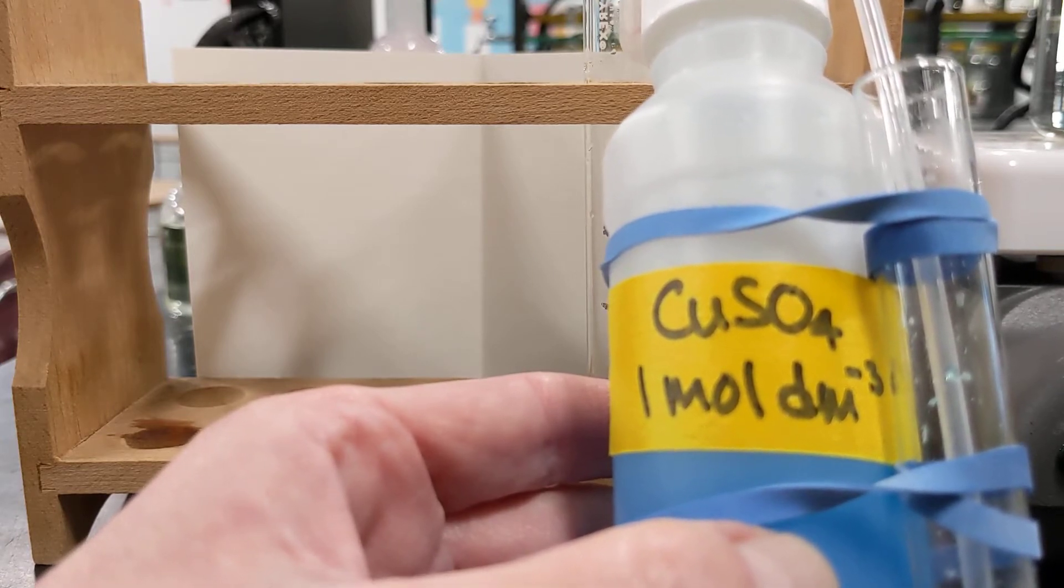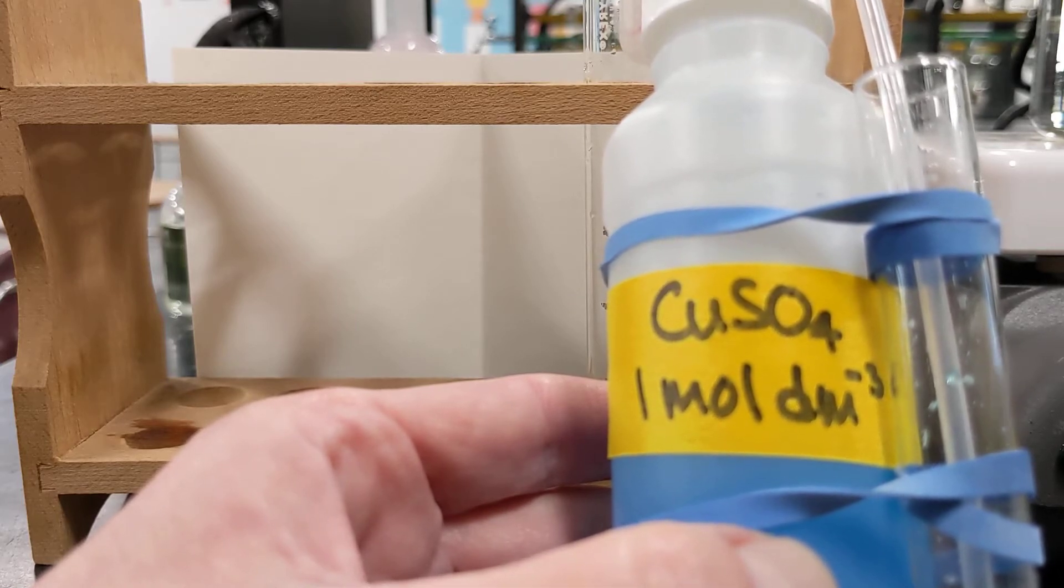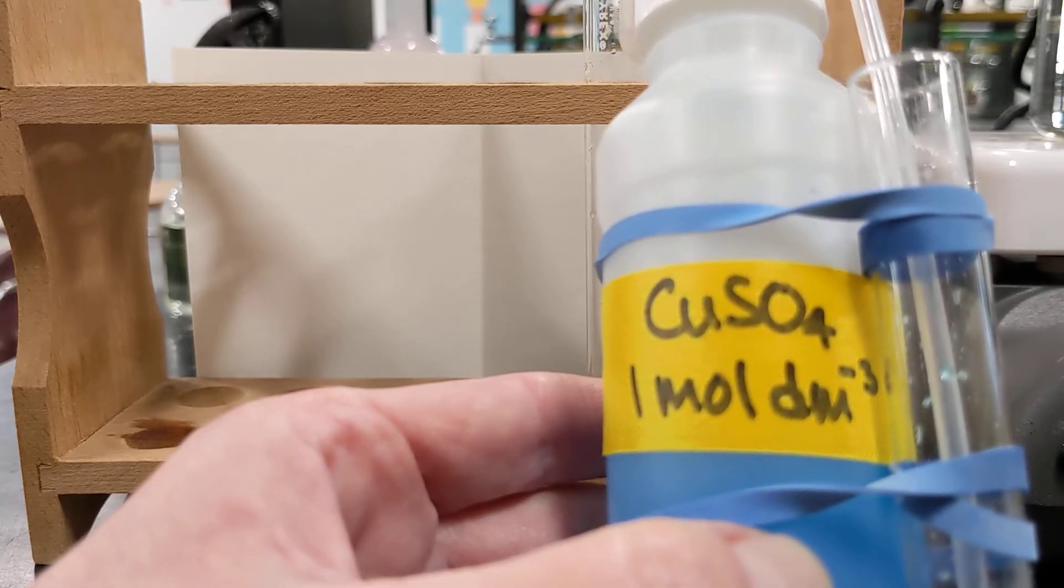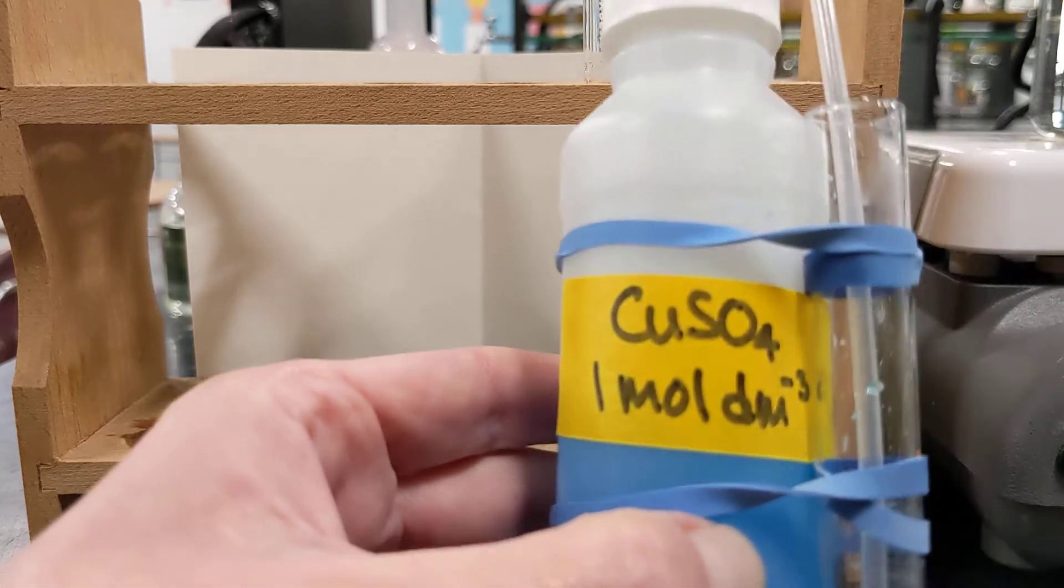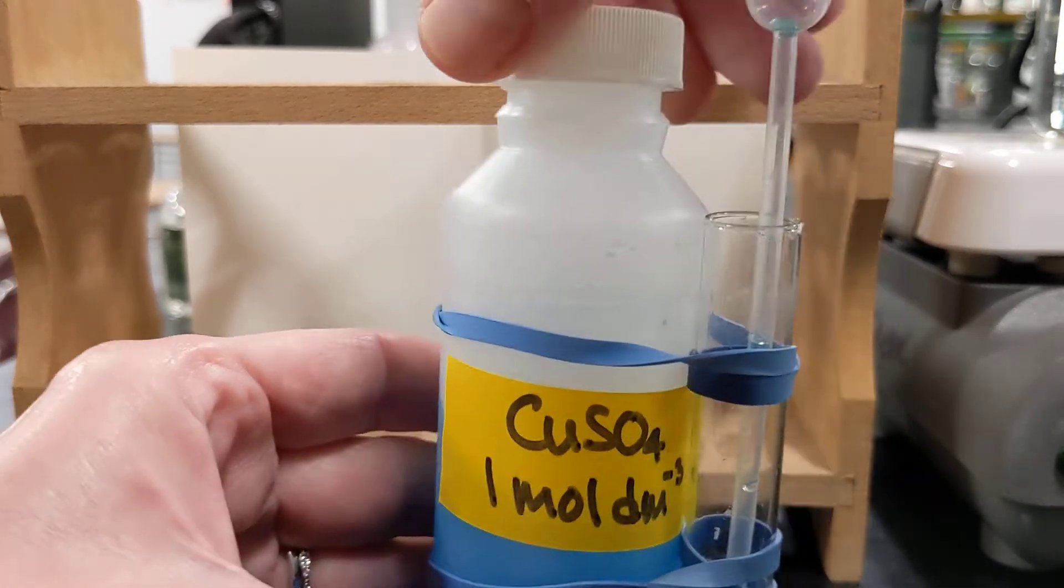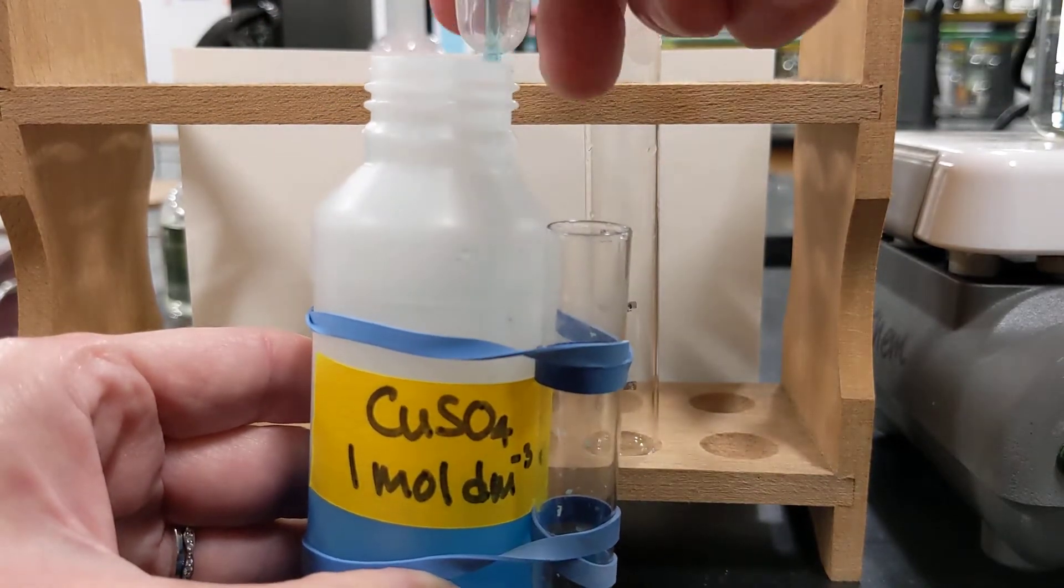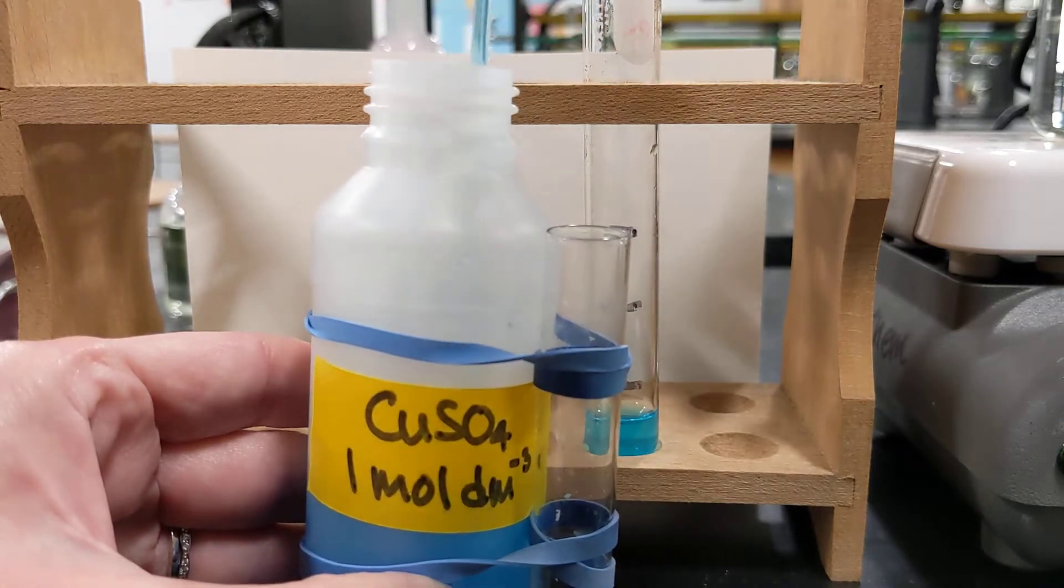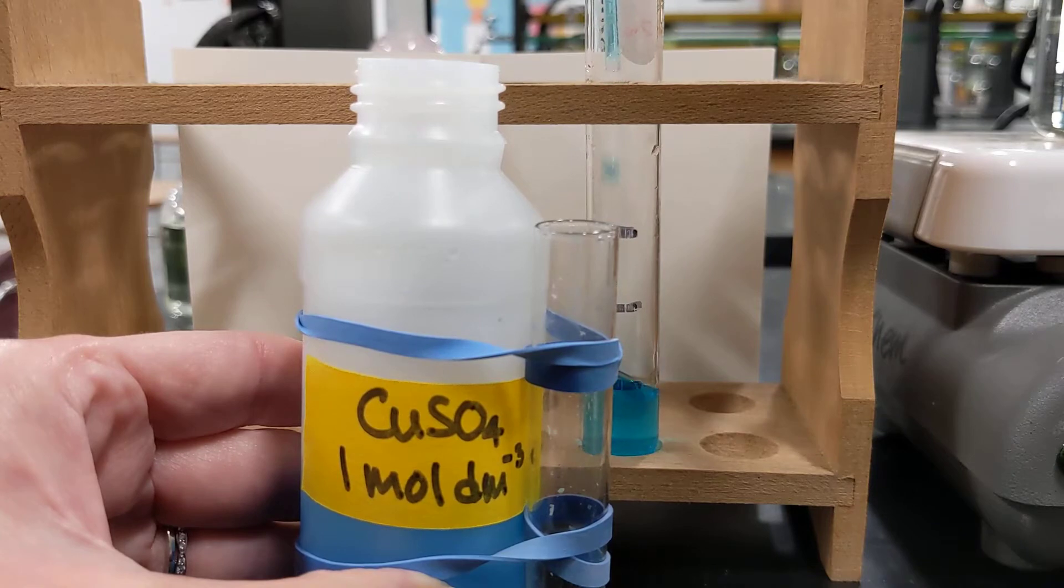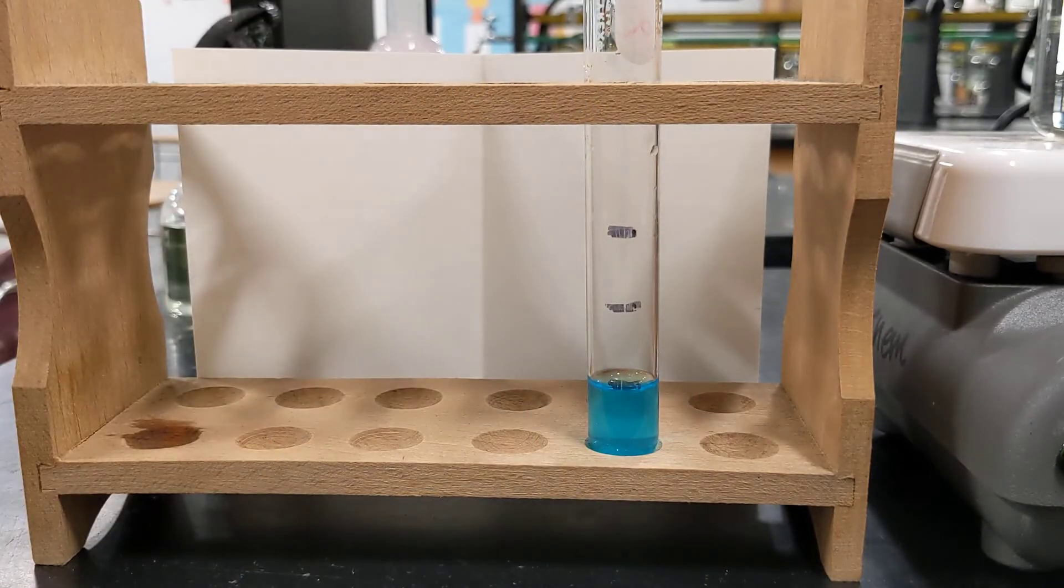So when you go to answer the question on the back of the page, question number one, that's what it's referring to. Your answer is right there in step three of the procedure. Okay, so I'm going to take some of this and add it to the test tube up to the first mark using a little dropper pipette. Okay, there we go, the copper 2 sulfate is in there.